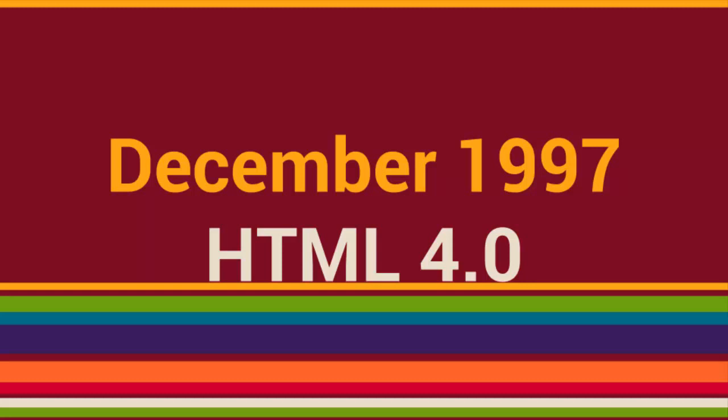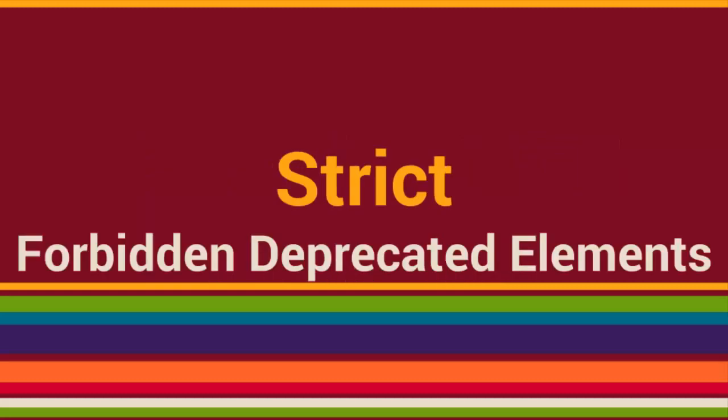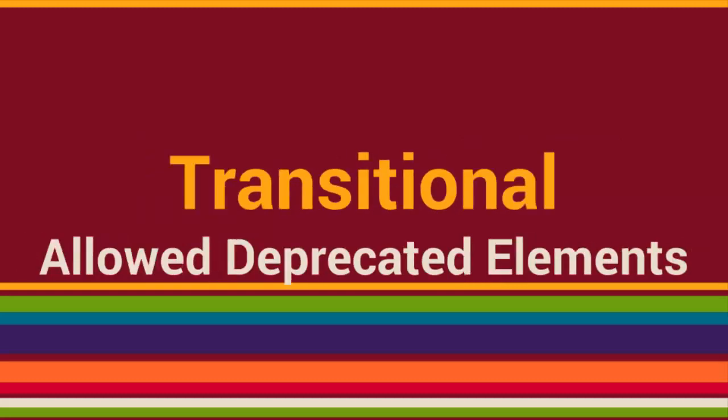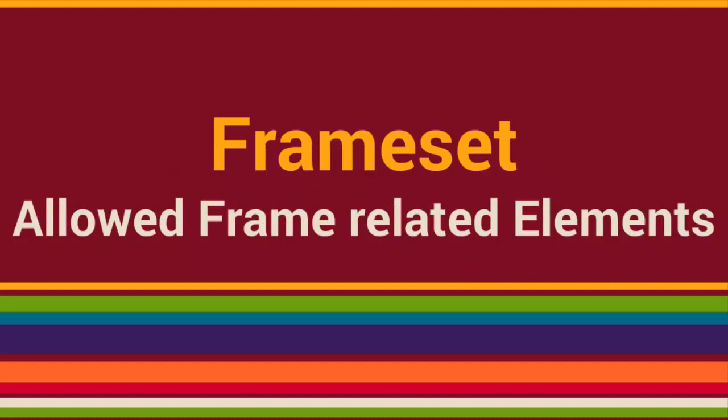In December 1997, HTML 4 was published as a W3C recommendation, which included three variations: strict, in which deprecated elements were forbidden; transitional, in which deprecated elements were allowed; and frameset, in which mostly only frame-related elements were allowed.